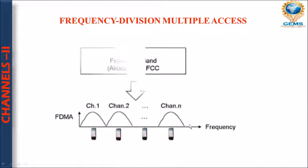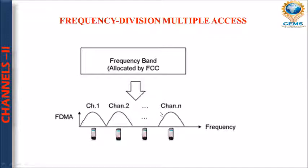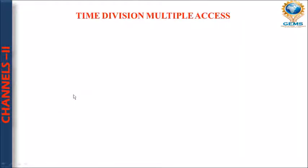Let us discuss FDMA with a diagram. This shows the frequency band allocated by FCC. We have many channels — channel 1, 2, 3, 4, up to channel N. At each channel, we have some electronic gadgets such as mobile phones. The graph is manipulated as per frequency, illustrating how FDMA operates.